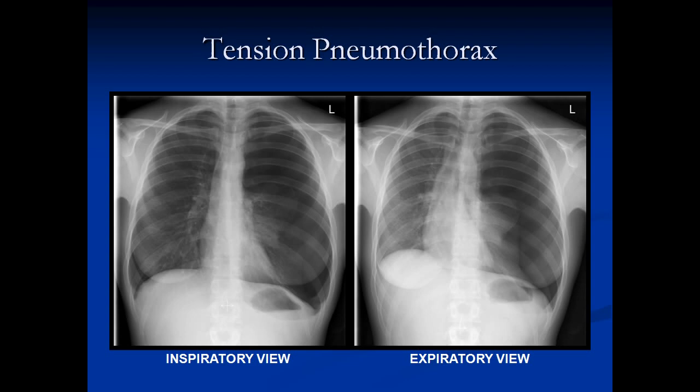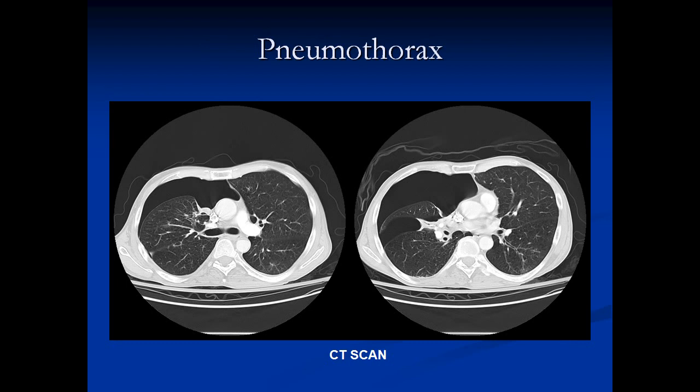In the next study, we have an inspiratory view on the left and an expiratory view on the right. With both expiration and inspiration, the mediastinum has shifted way over towards the right side. This implies there is tension in the left pneumothorax, and this person needs a chest tube fairly urgently. The white structure in the center of the left hemithorax is the collapsed lung. On CT scan, air always rises — so if the patient is lying down, you'll see the pneumothorax against the anterior chest wall; if the patient is standing up, you'll see it in the apex.